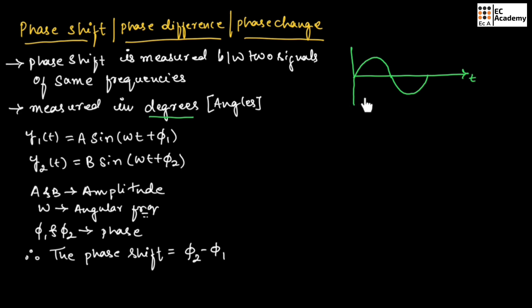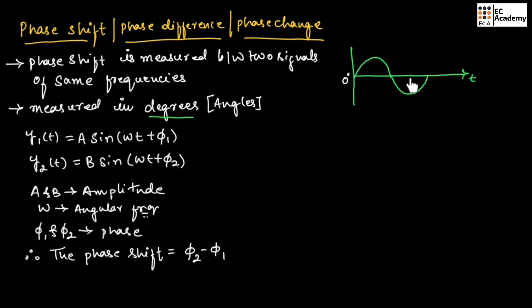To understand phase shift, let us consider a sinusoidal signal. In this sinusoidal signal, the origin point represents the starting point of the signal, which we will generally consider as 0 degrees. From here, at this point it is 90 degrees, here it is 180 degrees, at this point it is 270 degrees, and here it is 360 degrees. This is very important for us to understand the phase shift.